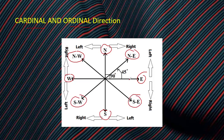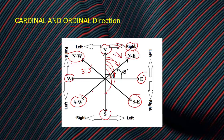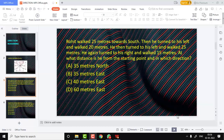We have to memorize all four cardinal and four ordinal directions. We also need to learn the angles: North to Northeast is 45°, North to East is 90°, North to Southeast is 135°, North to South is 180°, North to Southwest is 225°, North to West is 270°, and North to Northwest is 315°. If you have to go right from North, you go clockwise; if left, you go anti-clockwise.